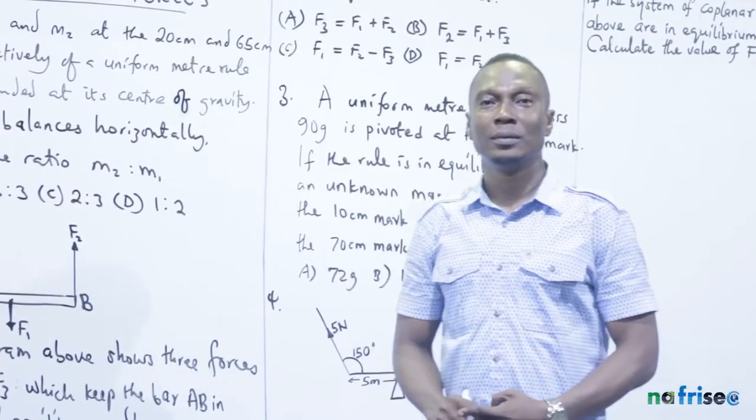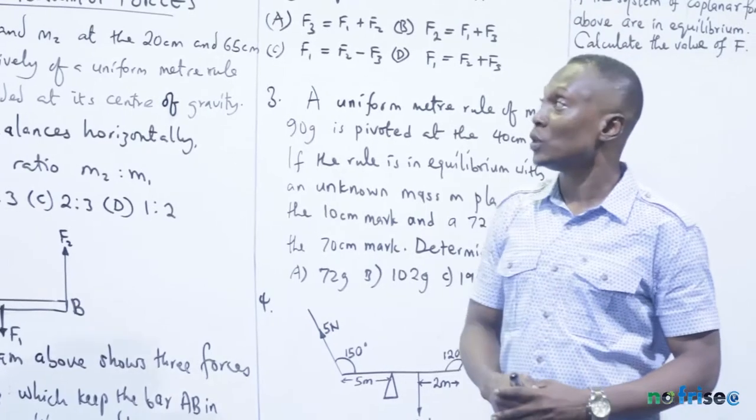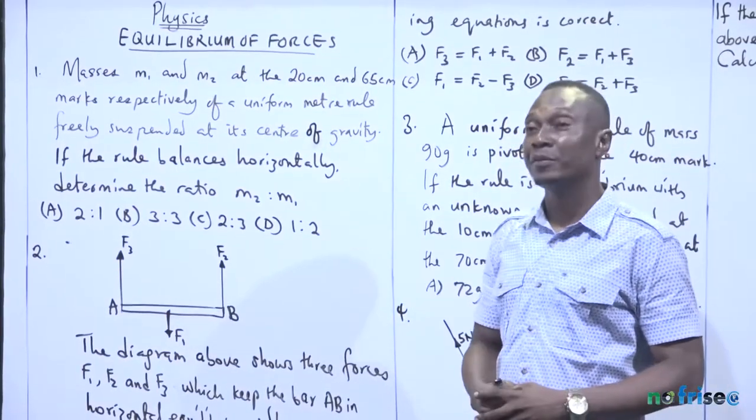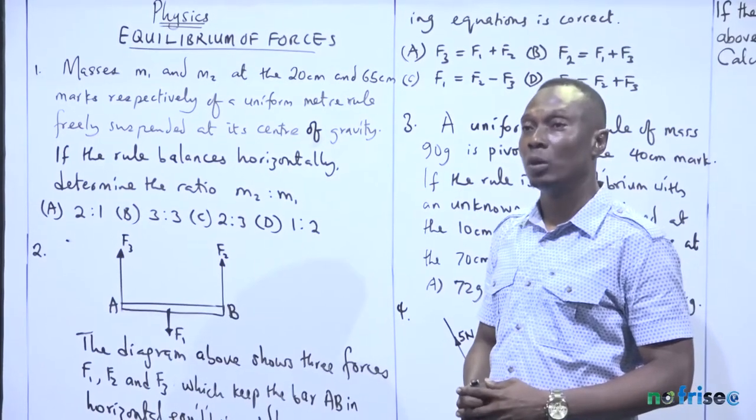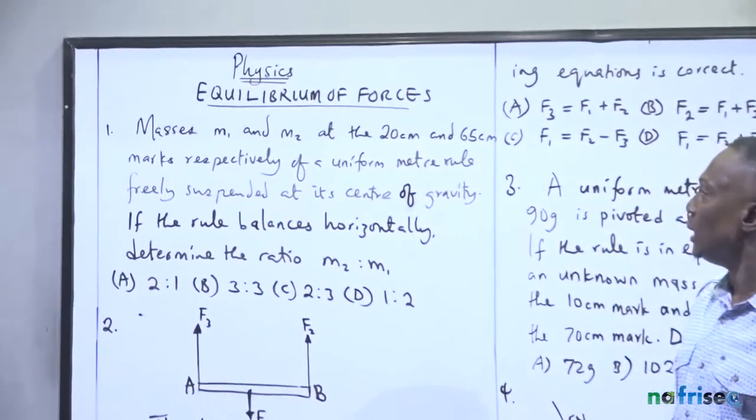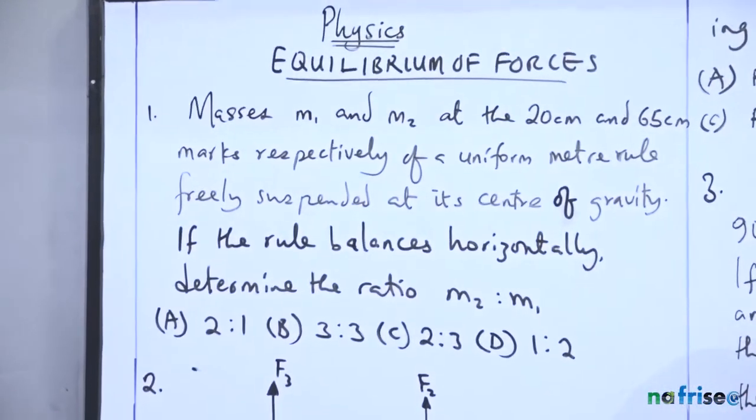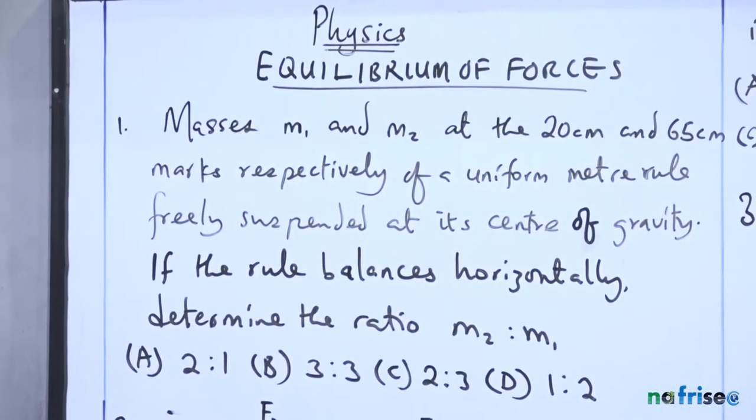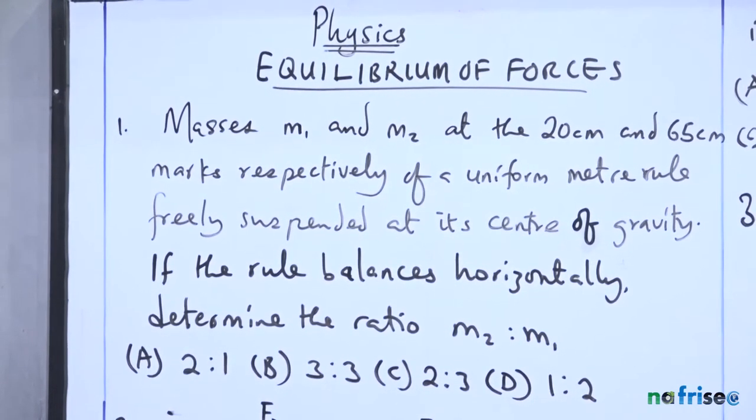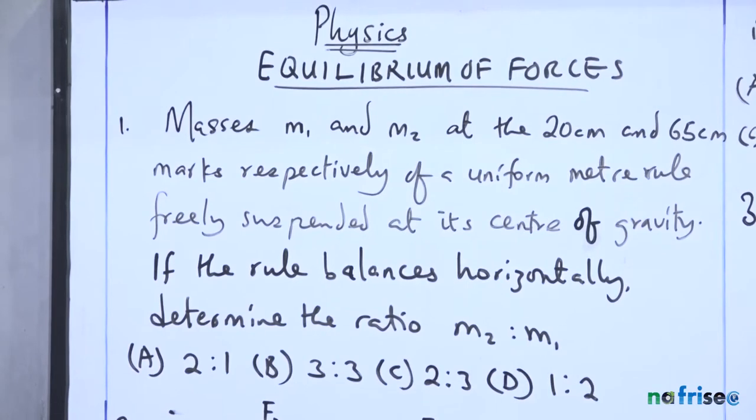Hello everyone, we're about to discuss questions involving equilibrium of forces. The question: masses M1 and M2 are at the 20 centimeter and 65 centimeter marks respectively of a uniform metal ruler.